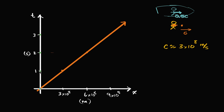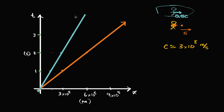After one second, she's moving half the speed of light, so she would have gone 1.5 times ten to the eighth meters. After two seconds, she would have gone as far as light travels in one second — because she's going half the speed of light. After three seconds, she will have gone 4.5 times ten to the eighth meters. So if I were to plot her path on the diagram, it would look like this diagonal line — that's the path of my friend.